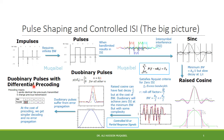This has been a general overview. There are other videos and presentations to explain the individual items in detail: impulses, pulses, SINC, raised cosine, dual binary, and finally dual binary pulses with differential pre-coding. Thank you for listening.